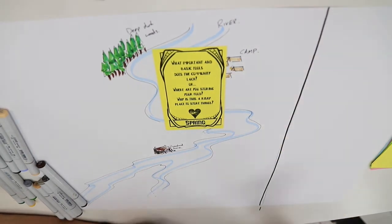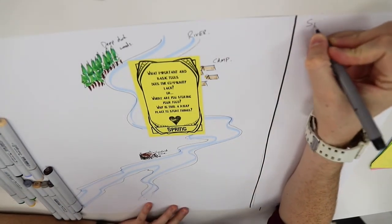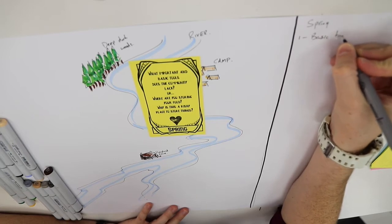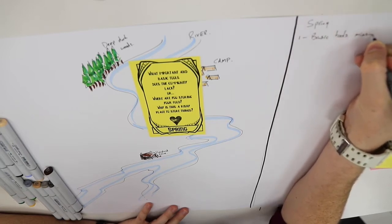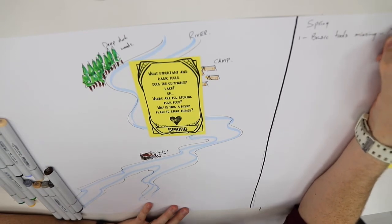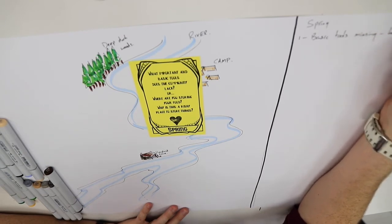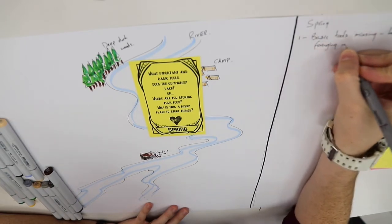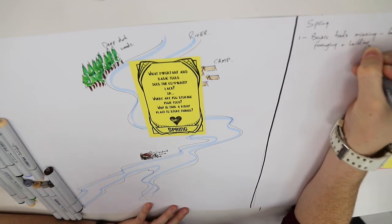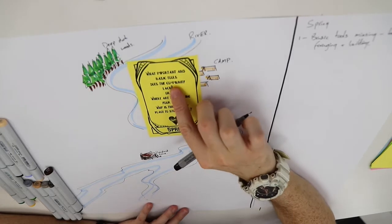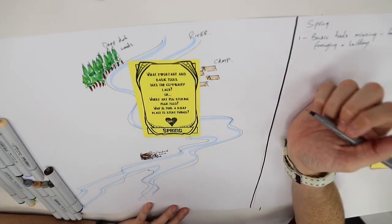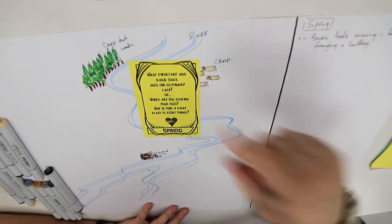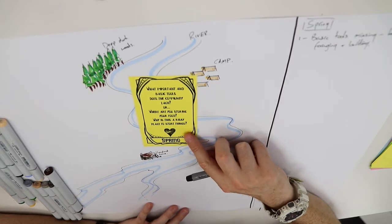For me, I think the one that I'm going to suggest is what important or basic tools does the community lack. Over here where I'm going to record what's happening, I'm going to make a note of spring, it's the first card of spring, and I'm just going to write down "basic tools missing." I think this group is missing just basic tools for foraging and building. I can justify this with the group, I can talk about it a little bit further, I can try to explain why I think this is the case.